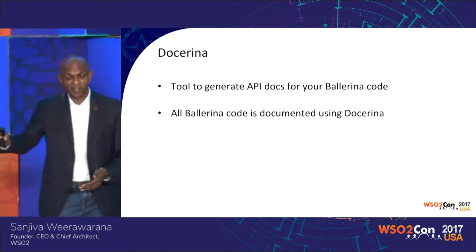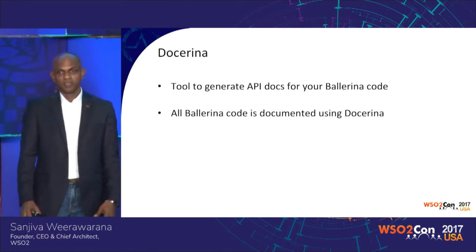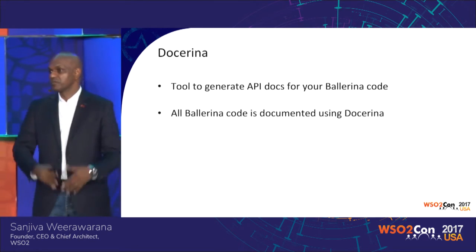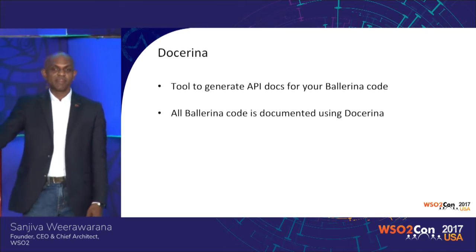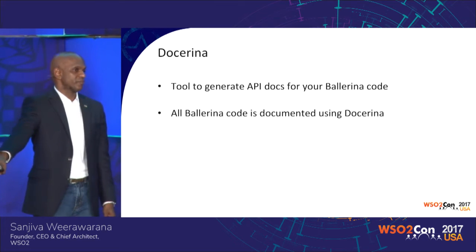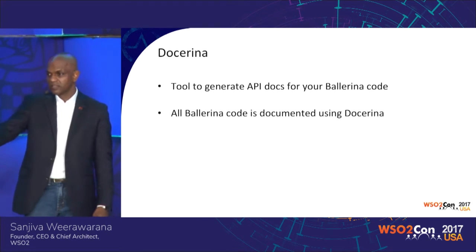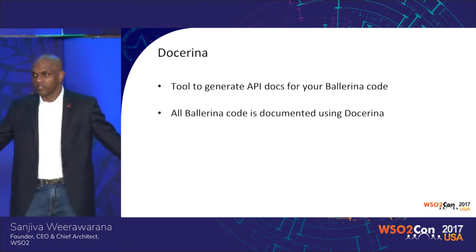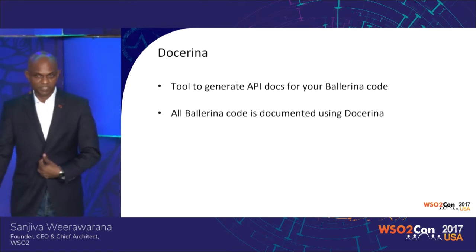Docarena will go and pull out all the documentation annotations and generate a nicely formatted HTML API doc representation. All the Ballerina stuff we've done is documented like that — there's an API doc link on the website that shows you all the API docs, done using this.